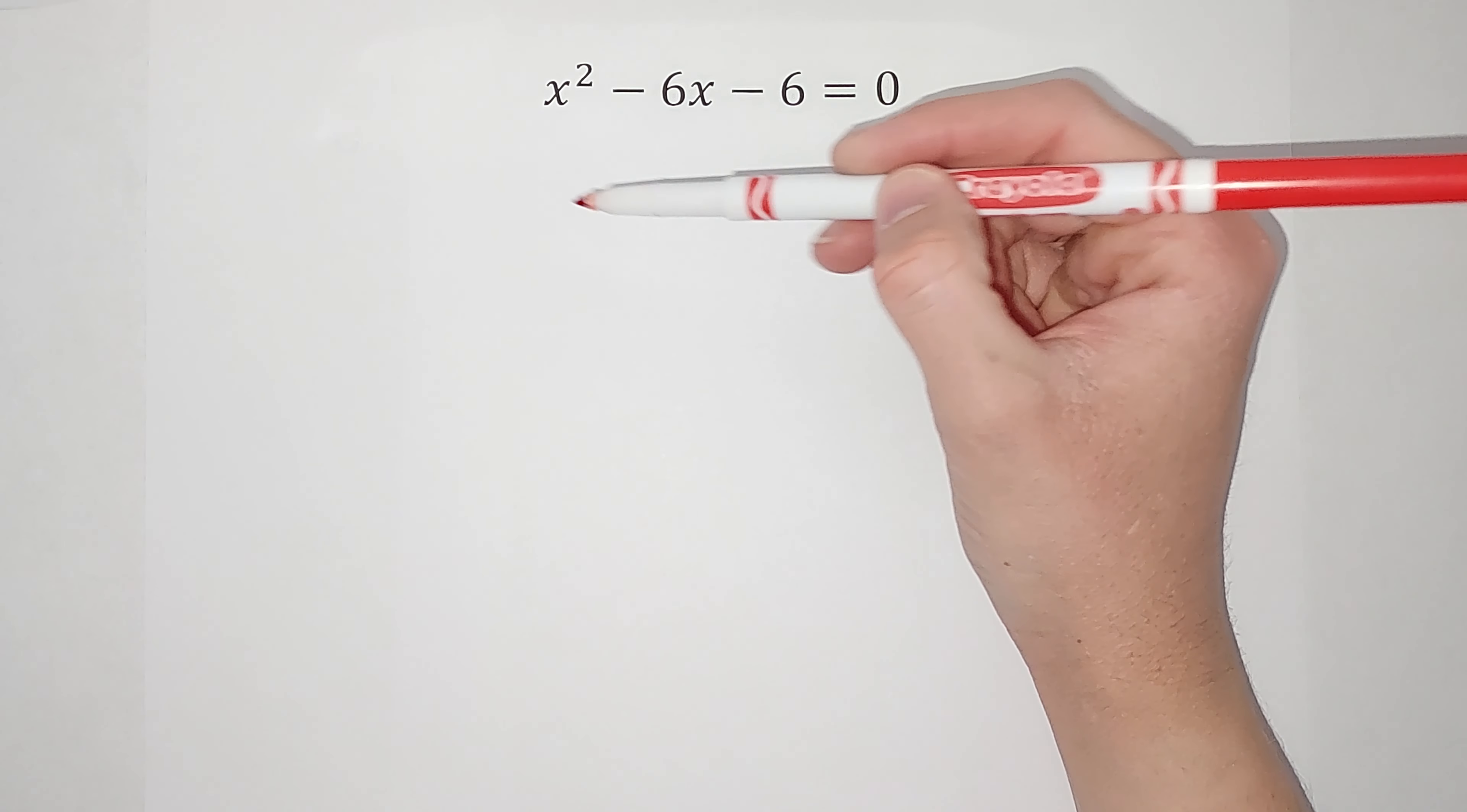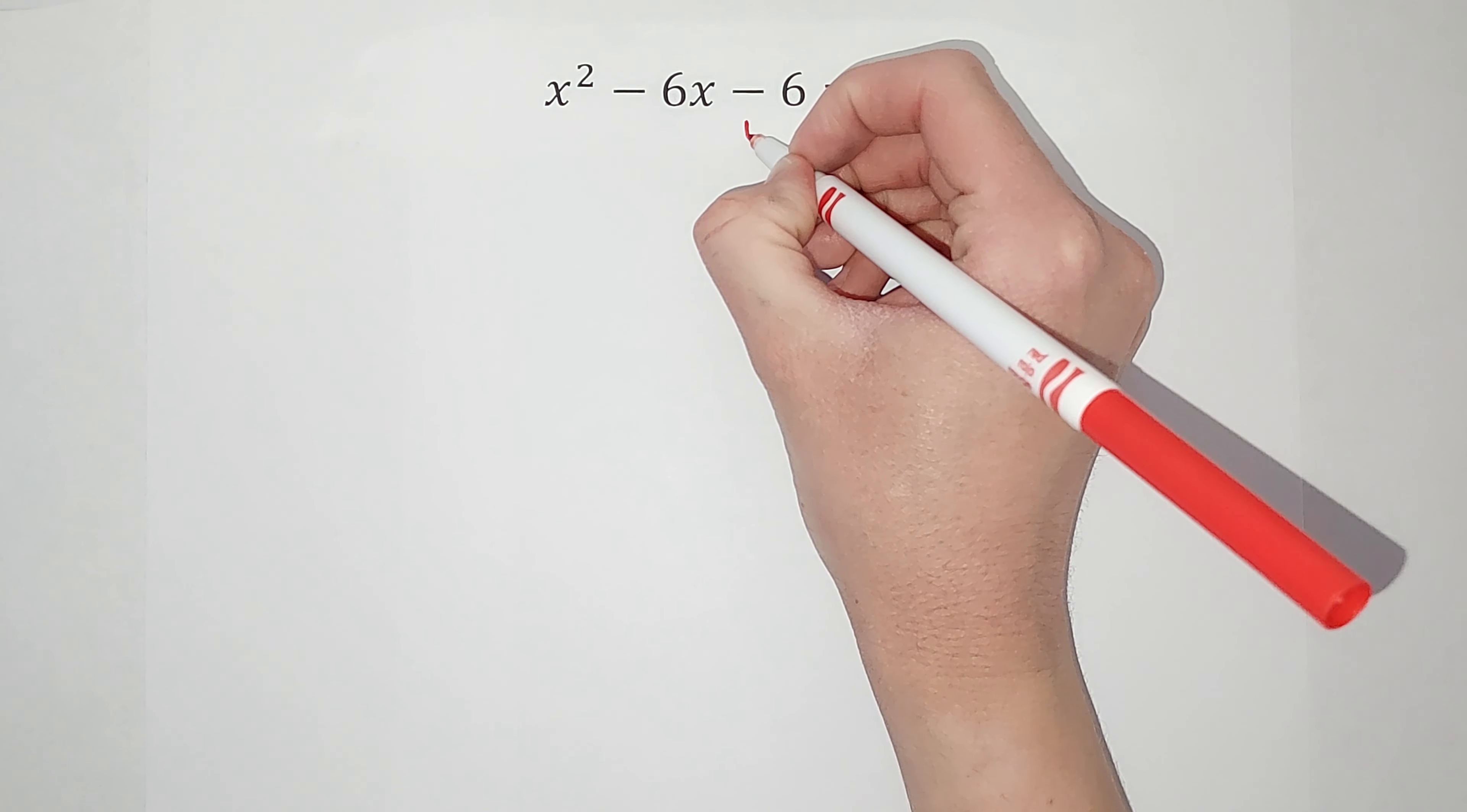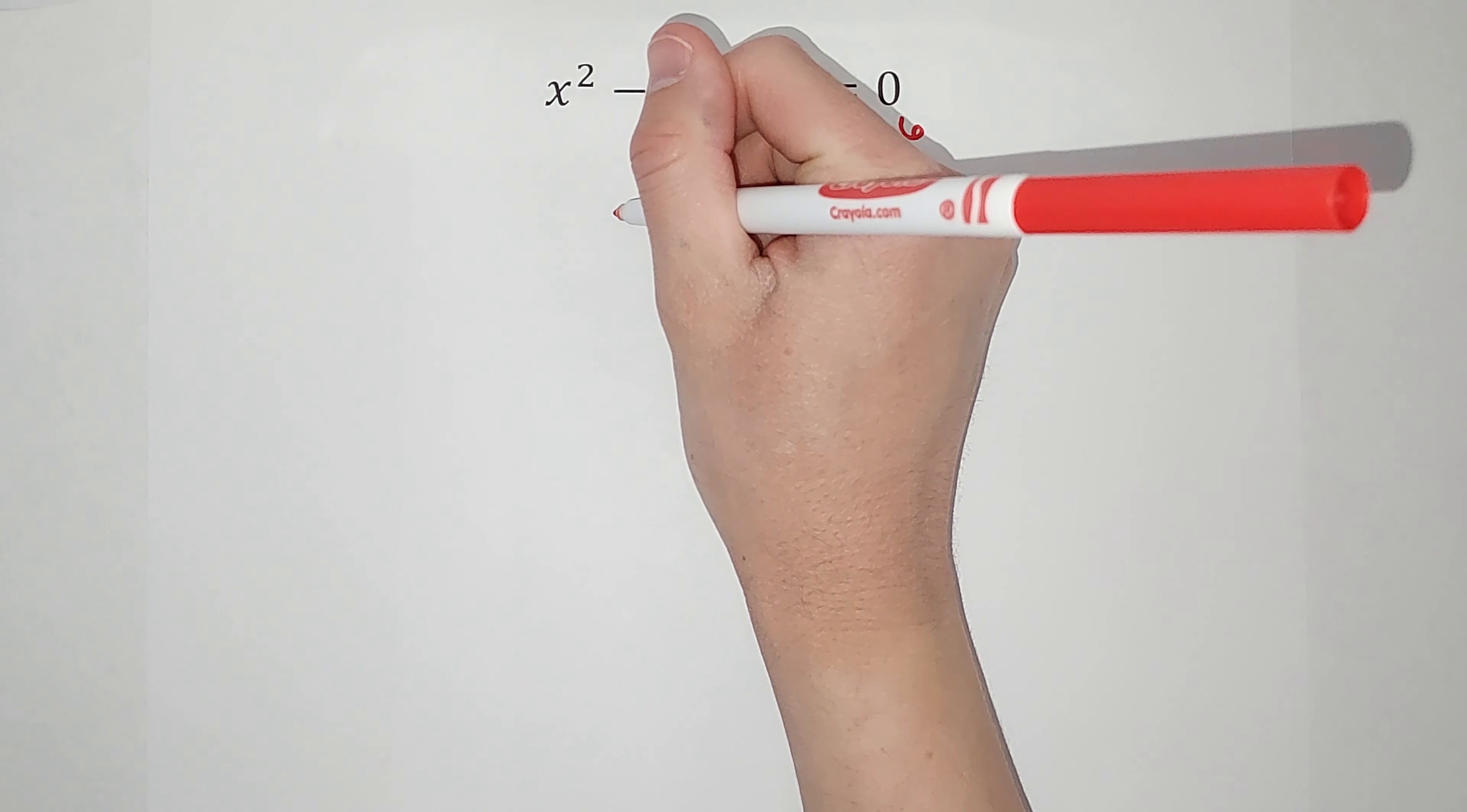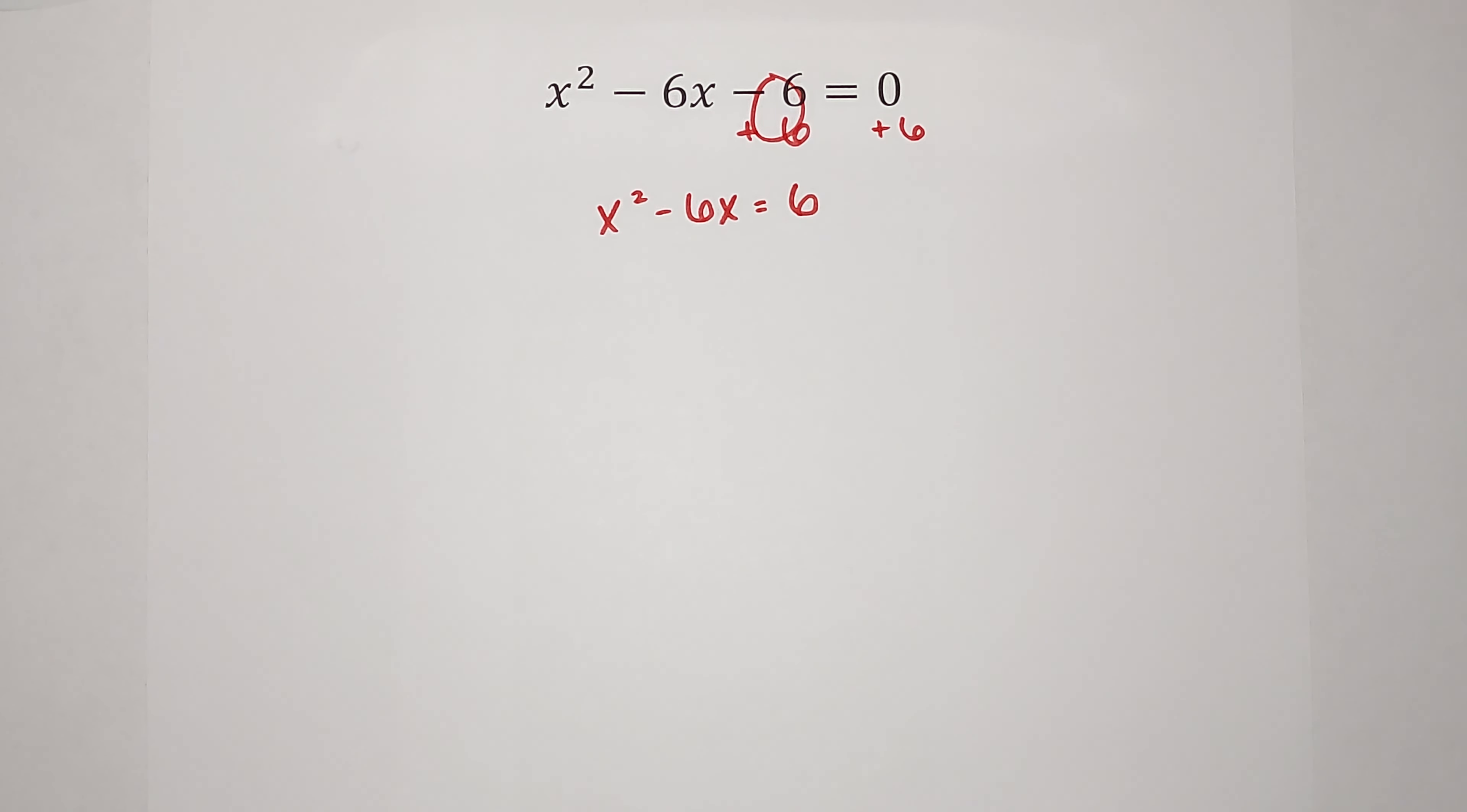When I do that, the first thing I want to do is get my variables alone. So all that means is I don't want this negative 6 here. So I'm gonna add 6 so it goes away. But if I add 6 to one side, I gotta add 6 to the other side to keep it balanced. We're all about balance in math. x squared minus 6x on this side equals 6.